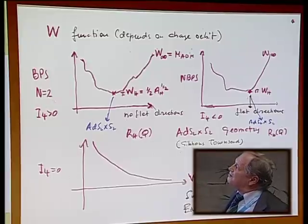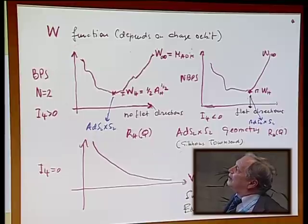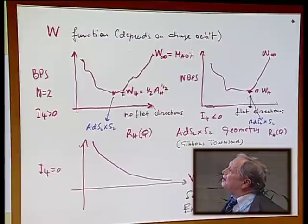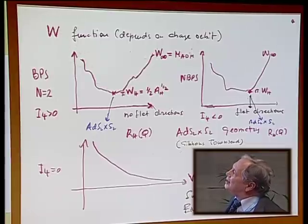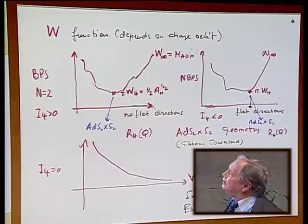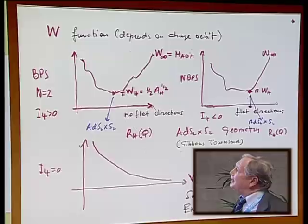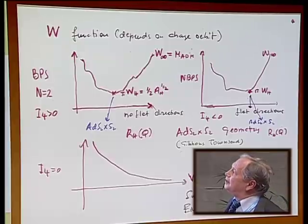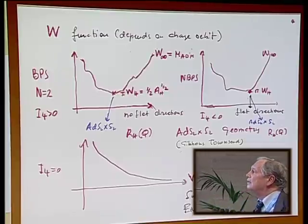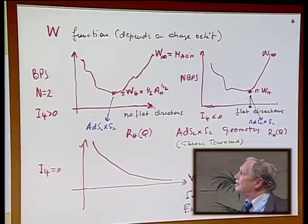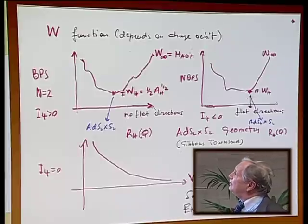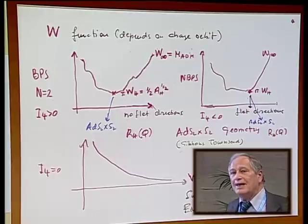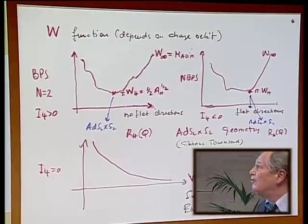If this invariant is different from zero, the black hole is BPS if it is positive and non-BPS if it is negative. But the thing they have in common is that this W function is actually bounded from below in the moduli space in both cases. And it has an extremum which fixes this extremum corresponding to the value of the critical value of the horizon of the scalar field. And this extremum is interesting because the value of this W function at the extremum is actually the entropy, the classical Bekenstein-Hawking entropy of the black hole.